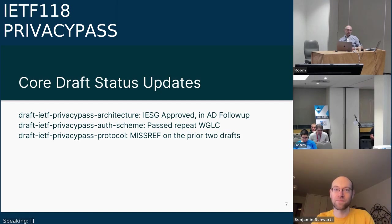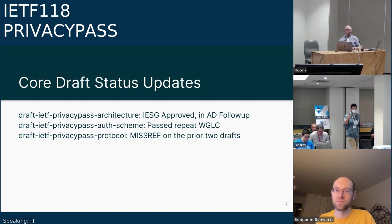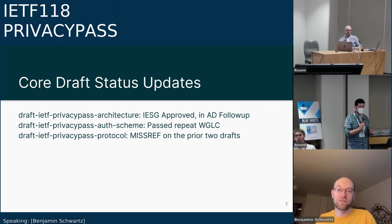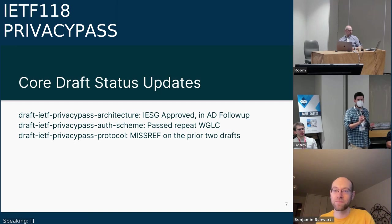The privacy pass protocol is actually with the RFC editor, but it's misref — it can't move forward because it has dependencies on the other two drafts. Tommy asked about the auth scheme: an automatic notification was sent to the AD when we changed the draft status. The chairs will follow up to confirm there's no further action needed from the working group or the authors. Someone suggested sending an email to the list saying 'AD, please progress.'